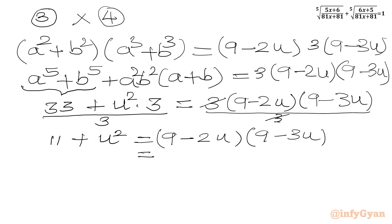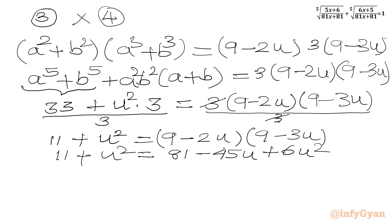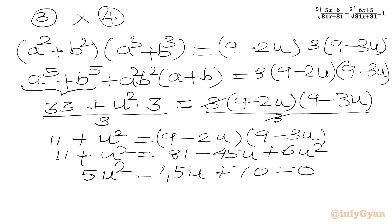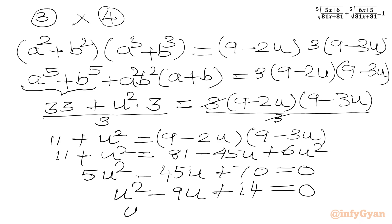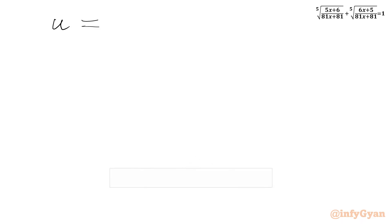Now we have to simplify the right-hand side. We get 81−27u−18u+6u² = 81−45u+6u². The left-hand side is 11+u². Taking all terms to the right-hand side gives 5u²−45u+70=0. The equation is divisible by 5, so dividing both sides gives u²−9u+14=0, which we can easily factorize as (u−2)(u−7)=0. Using the zero product rule, either u=2 or u=7.